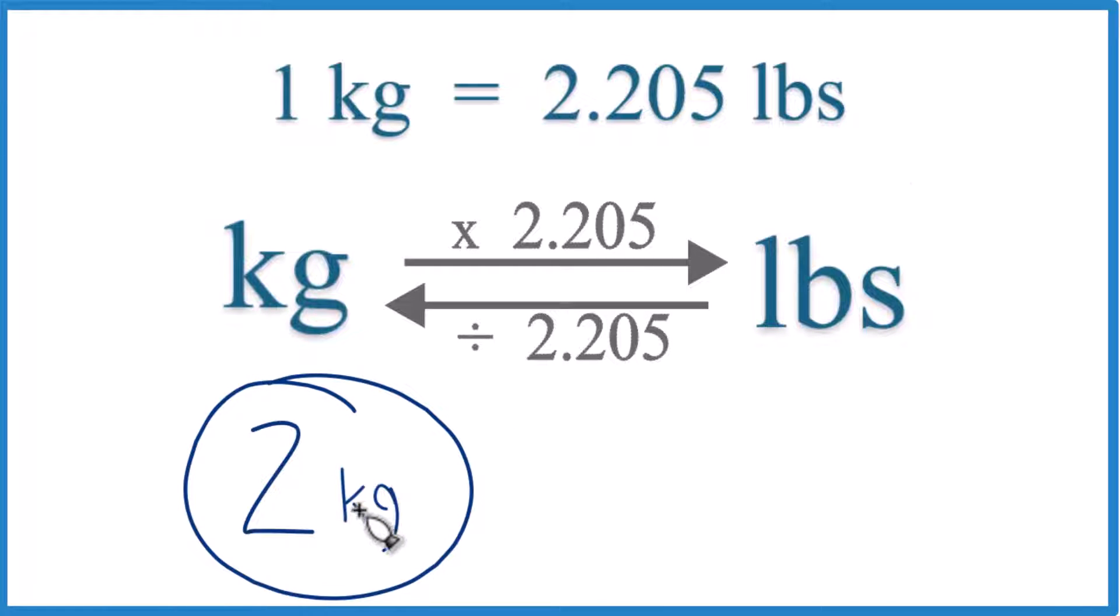Here's how you get from 2 kilograms to pounds. So, first off, if we want to convert kilograms to pounds, we need to know that 1 kilogram equals 2.205 pounds.